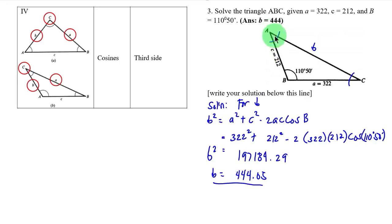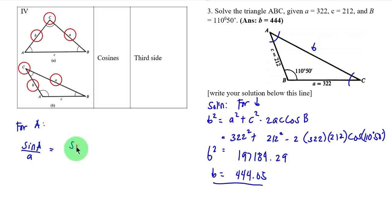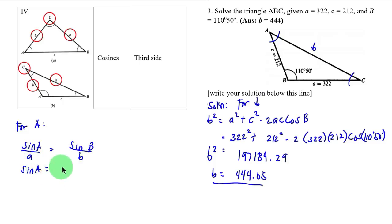Now we can solve for either angle A or angle C. Let us solve first for angle A using the Law of Sines: sine A over side a equals sine B over side b.